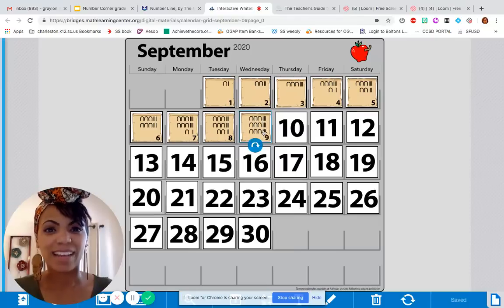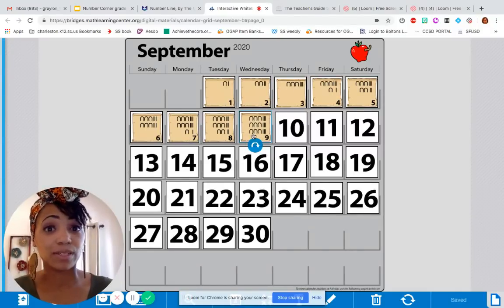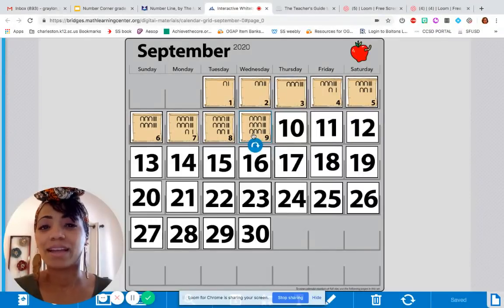Was your prediction right? Yeah, there are nine tally marks and nine horseshoes. Tomorrow is going to be our big day to talk about calendar grid, and we'll discuss some of the other observations that you may have noticed and some of the other big ideas that we want you to know and understand for calendar grid for the rest of September.